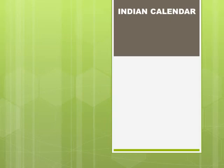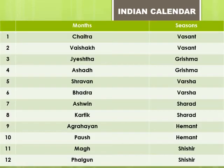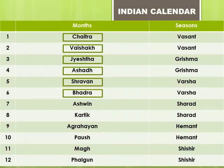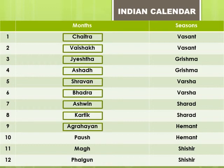Now let's read the months in the Indian calendar. Ashwin — A-S-H-W-I-N, Ashwin. Kartik — K-A-R-T-I-K, Kartik.